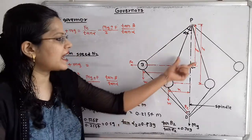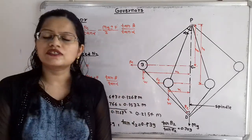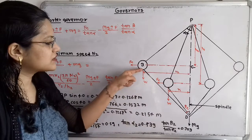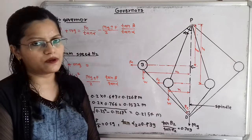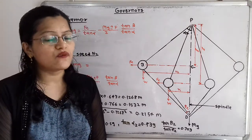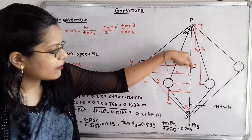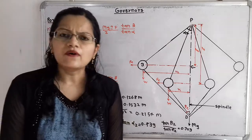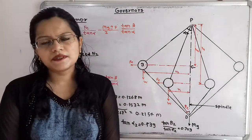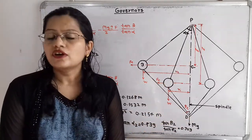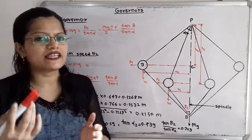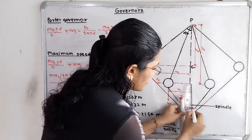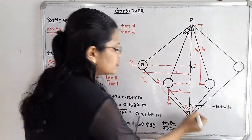We find R2 and H2. Fc acts radially outward and the weight of the fly ball acts vertically downward through the centre. The central load Mg acts vertically downward along the spindle axis. When the governor rotates with maximum speed the sleeve moves upward, so the frictional force acts in the opposite direction — vertically downward.